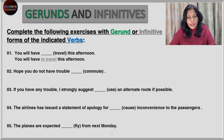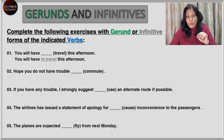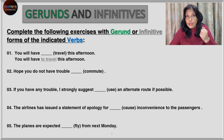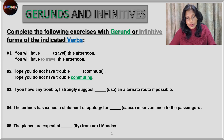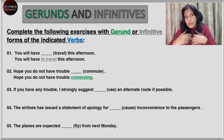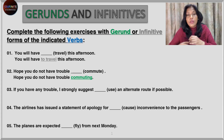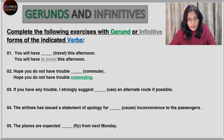The answers: You will have to travel this afternoon — we are using the infinitive form here. The infinitives are all grey and the gerunds are all green. Next: hope you do not have trouble commuting. After the word 'trouble', there are certain verbs after which we use the gerund form, so we use 'commuting' — I-N-G — that is the gerund form.